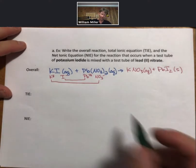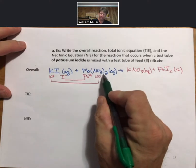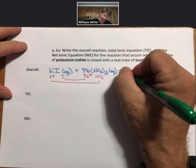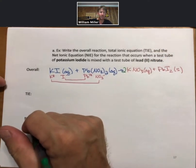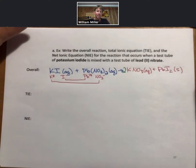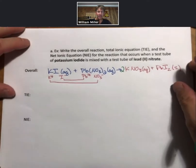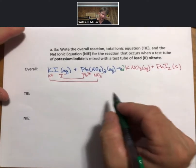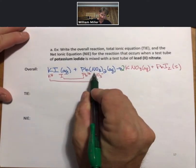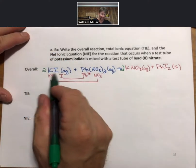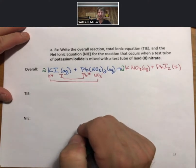It's not balanced yet. I can see that I have two nitrates here, but only one nitrate on the product side. Without going through all my rules for balancing reactions, I'm going to just balance it visually. Now I have two potassiums. I need two potassiums on the reactant side, and that gives me two iodides, and everything is balanced right there.